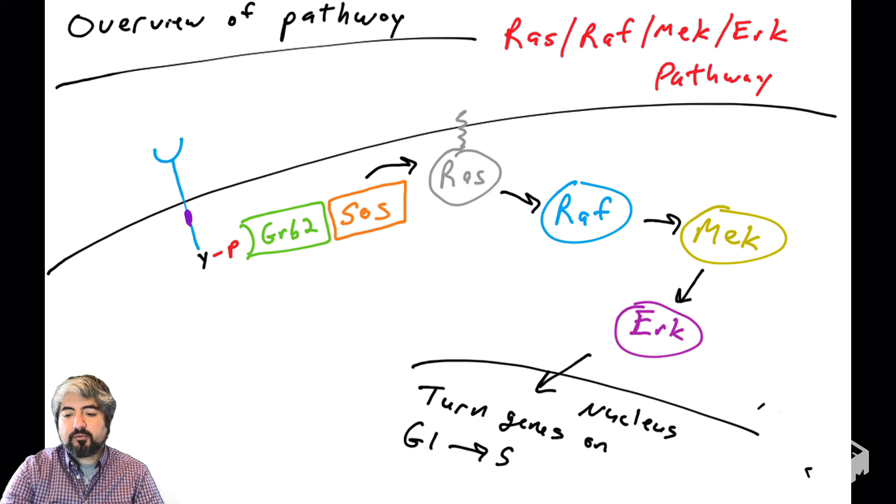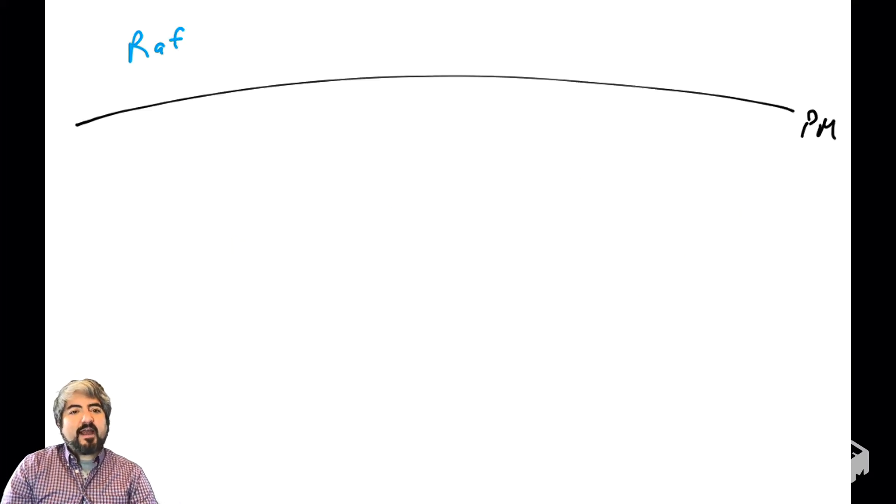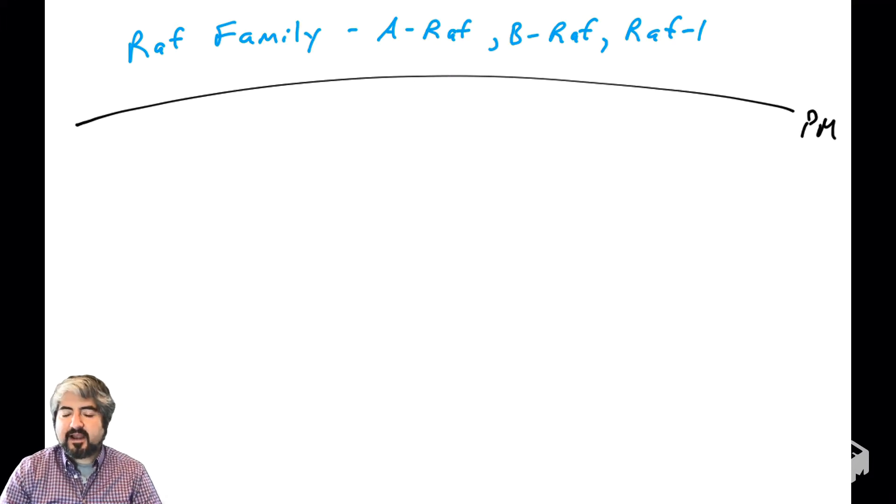RAF is a very important protein. What is RAF? Well, there's not just one RAF. There are multiple versions of RAF, and we've covered in a previous video the idea of gene families. So RAF is part of a gene family.